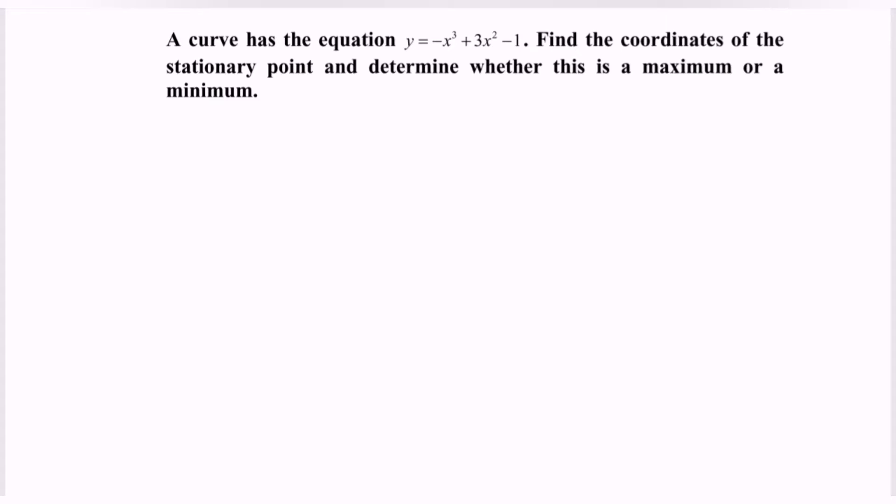A curve has the equation y = -x³ + 3x² - 1. Find the coordinates of the stationary point where we have the situation dy/dx = 0.